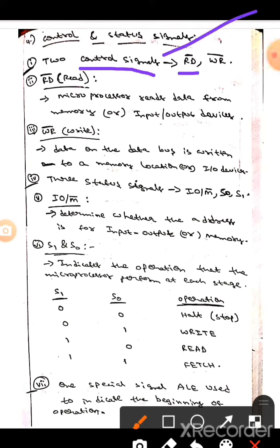There are two control signals. They are RD bar and WR bar. Here RD bar means read. Here microprocessor reads data from memory and input output devices.